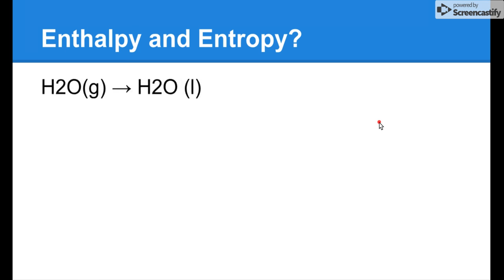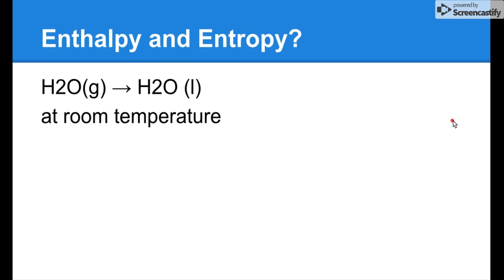Enthalpy and entropy for water vapor going to liquid at room temperature: negative delta S and negative delta H. We're going to less disorder — gas to liquid. Gases have a lot of disorder; liquids have less. And we are losing energy — gas has lots of energy, liquid has less, so the energy had to escape for that transition to happen.